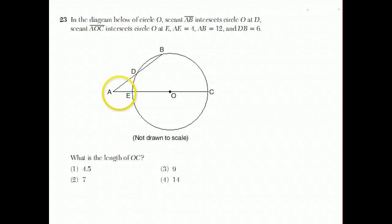So AE is 4, AB is 12, and DB is 6. There's a whole bunch of theorems about when there are lines like this in a circle. But when you have two secants, the rule is this.